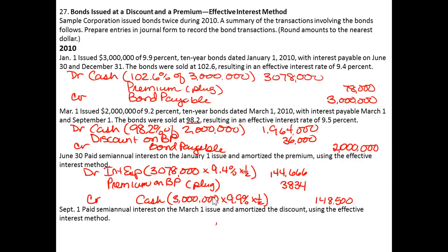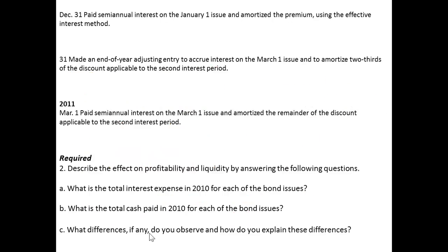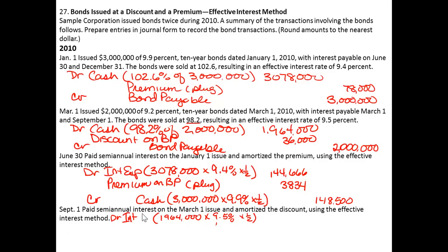On September 1, we're making our first interest payment on the bond issued at a discount. The debit to interest expense is the carrying value of $1,964,000 times the effective interest rate of 9.5% for half a year. The debit to interest expense on September 1 is $93,290.